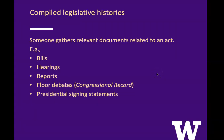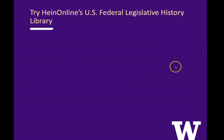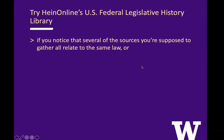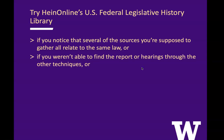The next tool I'm going to show you is compiled legislative histories. 'Compiled' just means somebody brought together a bunch of documents related to one act that went through Congress. Typically it will include bills, hearings, and reports. It might also include floor debates from the Congressional Record and presidential signing statements. You should try HeinOnline's U.S. Federal Legislative History Library if several of the sources you need all relate to the same law, or if you weren't able to find the report or hearings through other techniques, or if you'd just like to see how it all fits together.